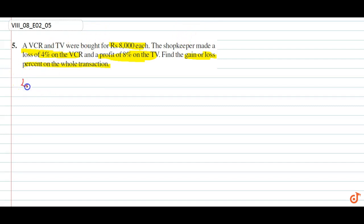Loss of 4% on VCR: 8000 into 4, this is rupees 320. Gain of 8% on TV minus 320 equals to 320 rupees net gain.